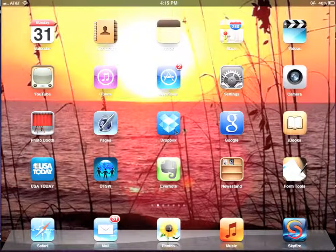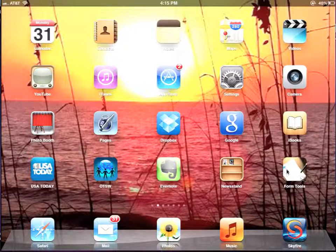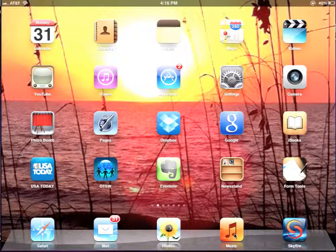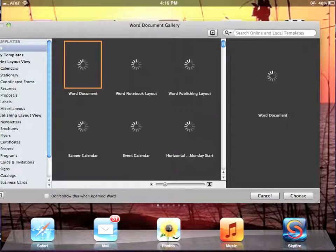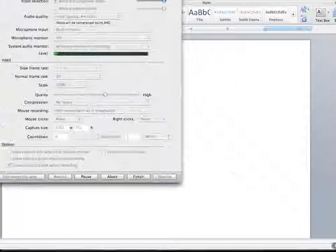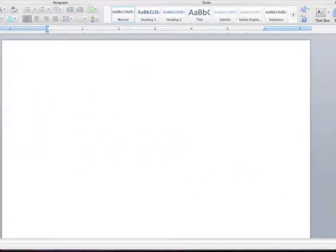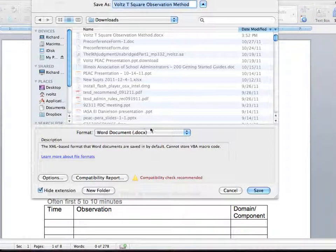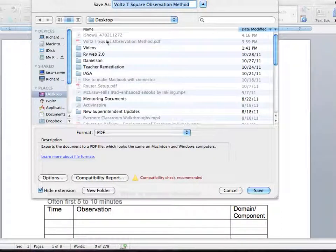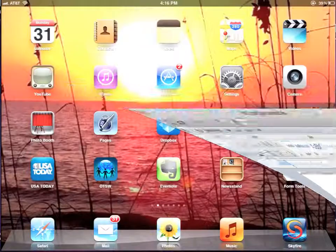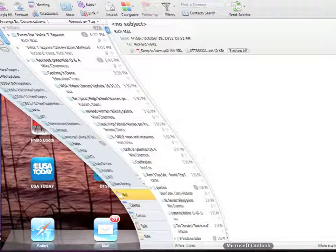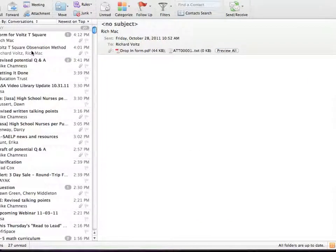To go back and review what we've done today, we've gone to the App Store and downloaded the app Form Tools. Then we made a Word document. The Word document in this case we called Voltz T-square. With that Word document, we saved it as a PDF. Then we put it in a place like our desktop where we could find it at a later point. We then went to our desktop, got the file, and went to our email system.